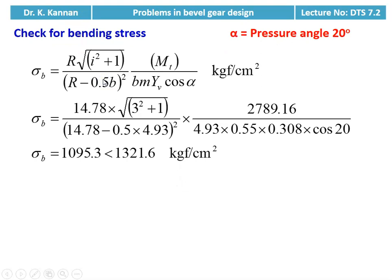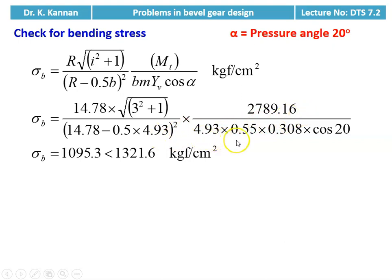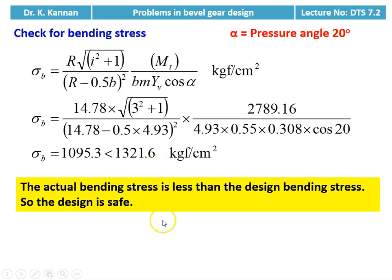We check for bending stress, taking pressure angle α = 20°. σB = [R × √(i² + 1) / (R − 0.5b)²] × MT(design) / (b × mt × YV × cos α). Substituting: σB = 14.78 × √(3² + 1) / (14.78 − 0.5 × 4.93)² × 2789.16 / (4.93 × 0.55 × 0.308 × cos 20°) = 1095.3 kgf/cm². This value is less than the design bending stress of 1321.6 kgf/cm². The actual bending stress is less than the design bending stress, so the design is safe.